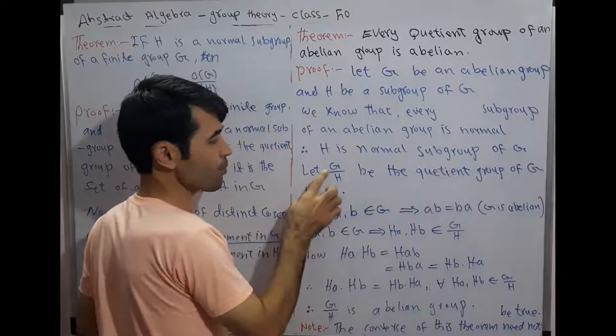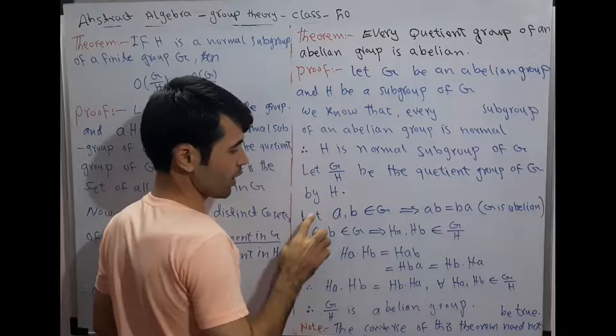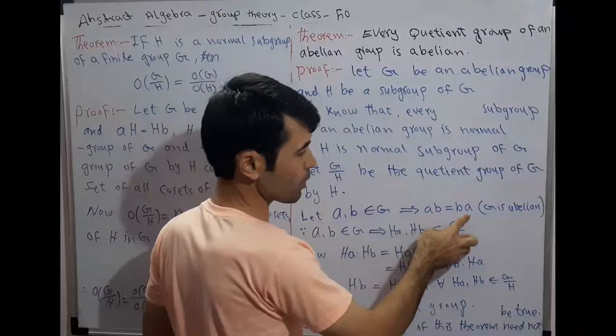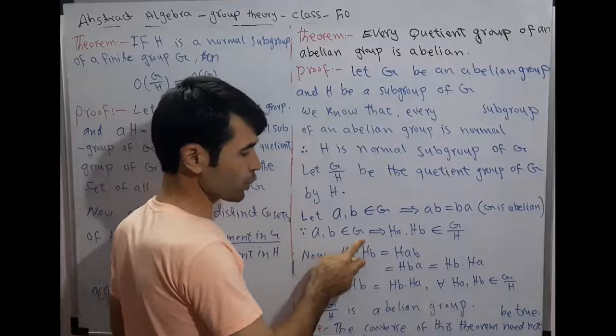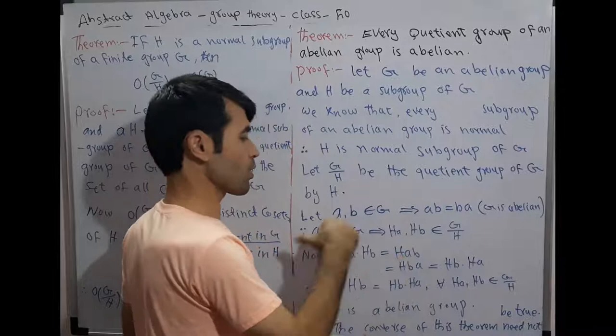Let G by H be the quotient group of G by H. Let a, b belong to G. This implies a times b equals b times a, because G is an abelian group — therefore the commutative axiom holds. Since a, b belong to G, this implies Ha and Hb also belong to G by H.